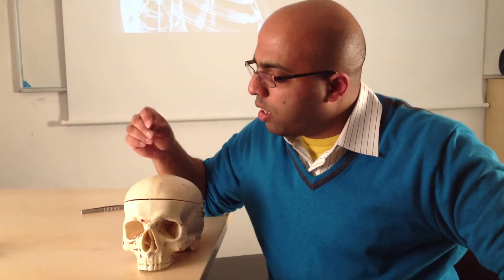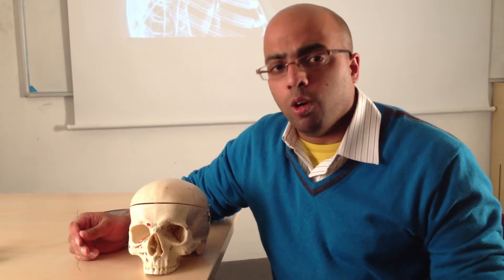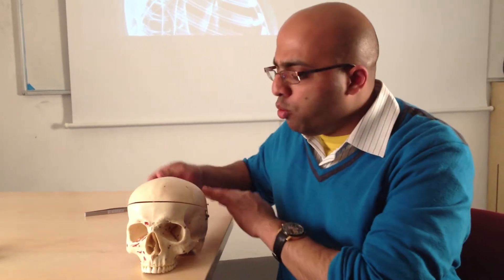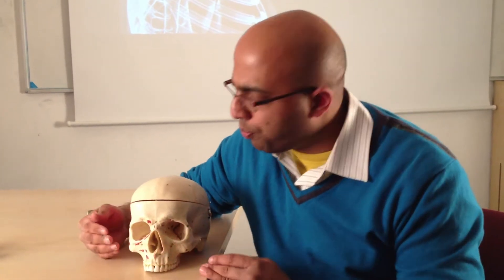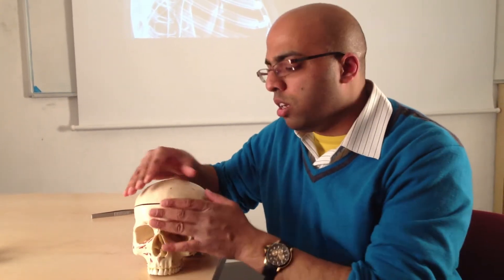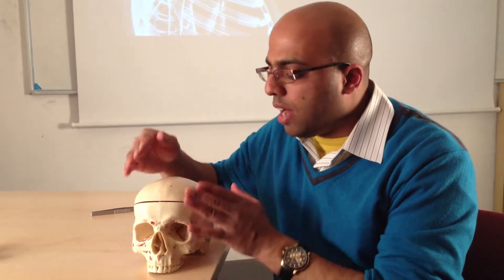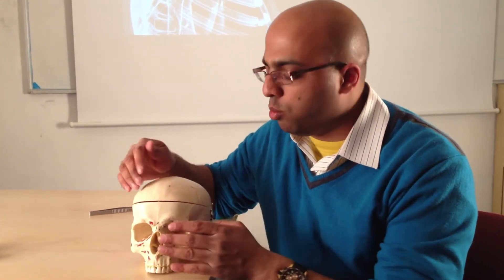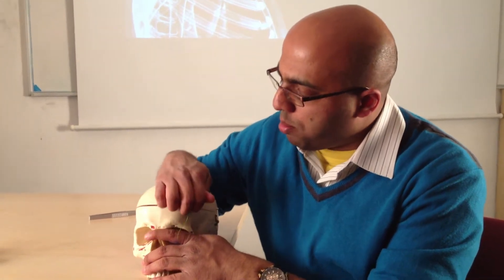Hiya. Now, in our previous video — this is the second video of three on the skull — we looked around at the superior, posterior, lateral and the anterior views of the skull. What we're going to do now is take a brief step inside the skull, start having a look at what's going on in there, and then we'll look at the inferior sides of the skull and see how the two relate to each other. So let's make a start.